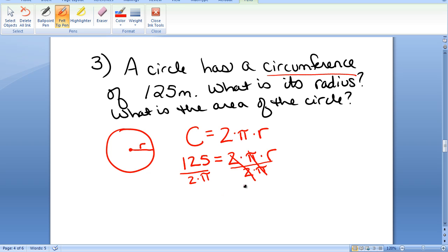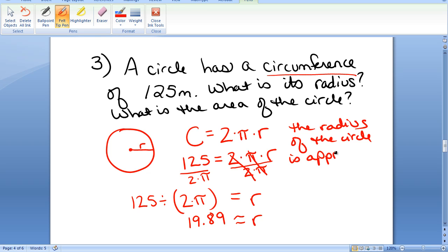And now I want to solve for r. So I will divide both sides by 2 times pi. That cancels out the 2 and the pi on the right side, leaving just r. And on the left side, remember when you type this in the calculator to put parentheses around the denominator. It's 125 divided by all of the denominator, 2 times pi. So when I type that in the calculator, I get approximately 19.89. So the radius of the circle is approximately 19.89 meters.